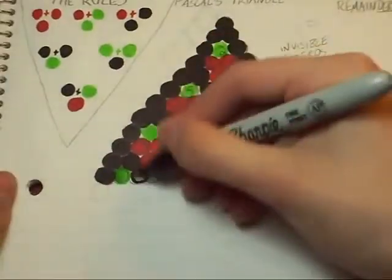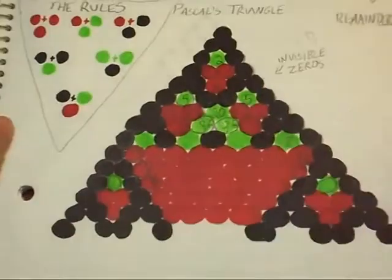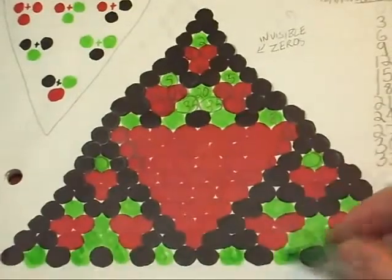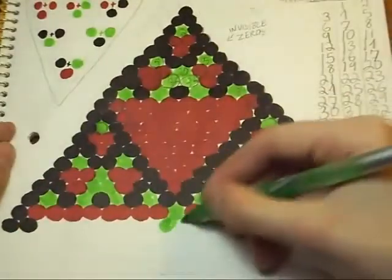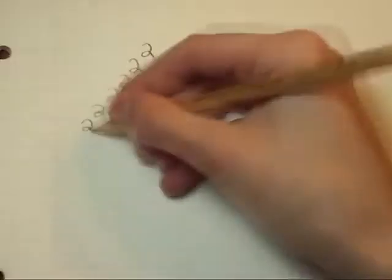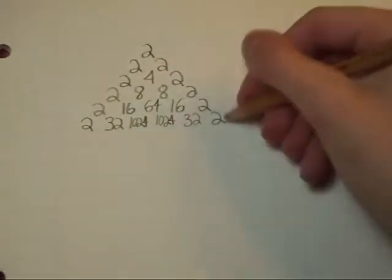Anyway, those are just a couple examples of number games that are out there. But you should also try making up your own. For example, I have no idea what you'd get if you highlight the prime numbers in Pascal's triangle. Maybe nothing interesting. Who knows? Or what happens if instead of adding to get the next row, you start with a 2 and a sea of invisible ones and multiply to get the next row? No idea what happens there either, or if it's already a thing people do or what.